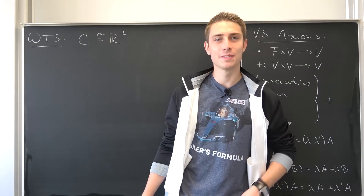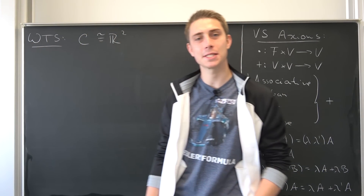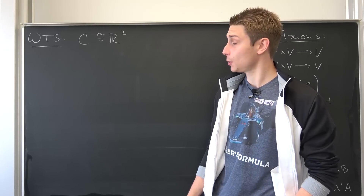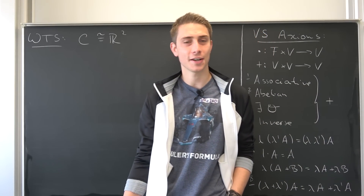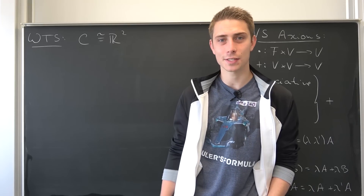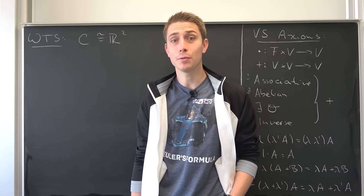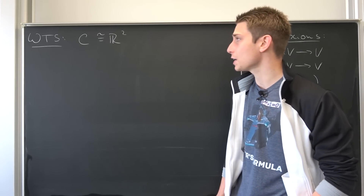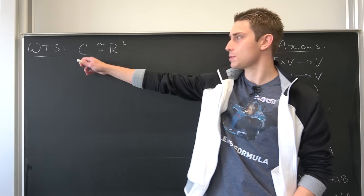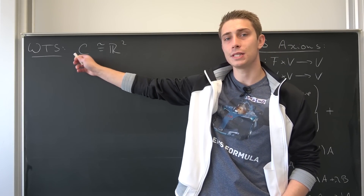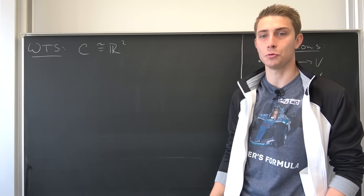Good morning, fellow mathematicians! Welcome back to another episode of complex numbers but different. It's finally getting kind of exciting. Today we would like to show that our set of complex numbers in matrix form is indeed isomorphic to R².